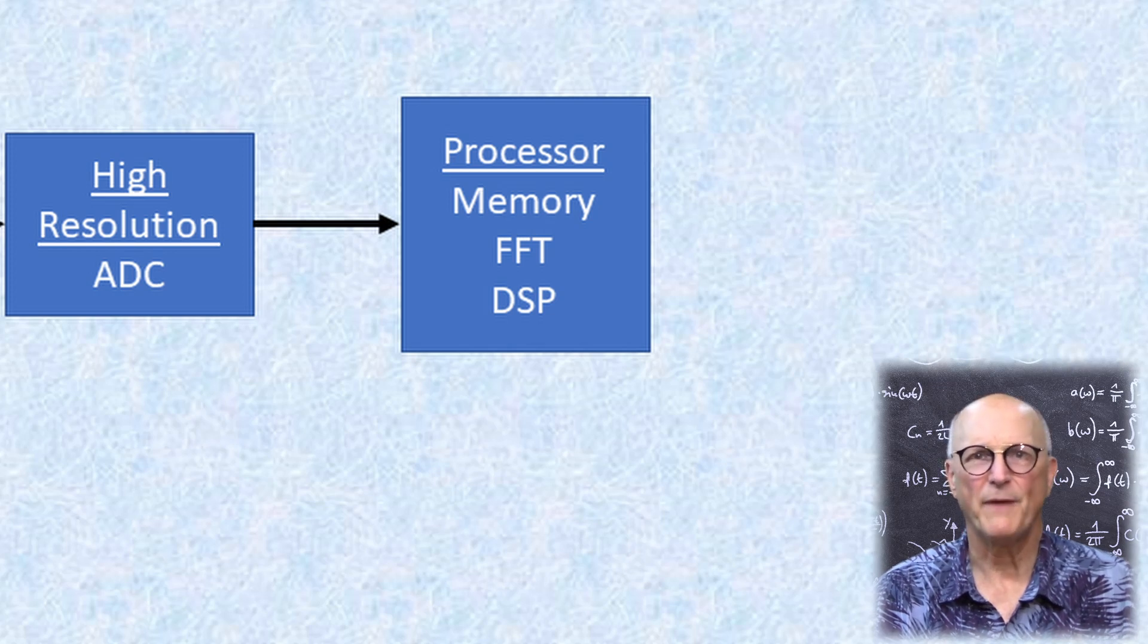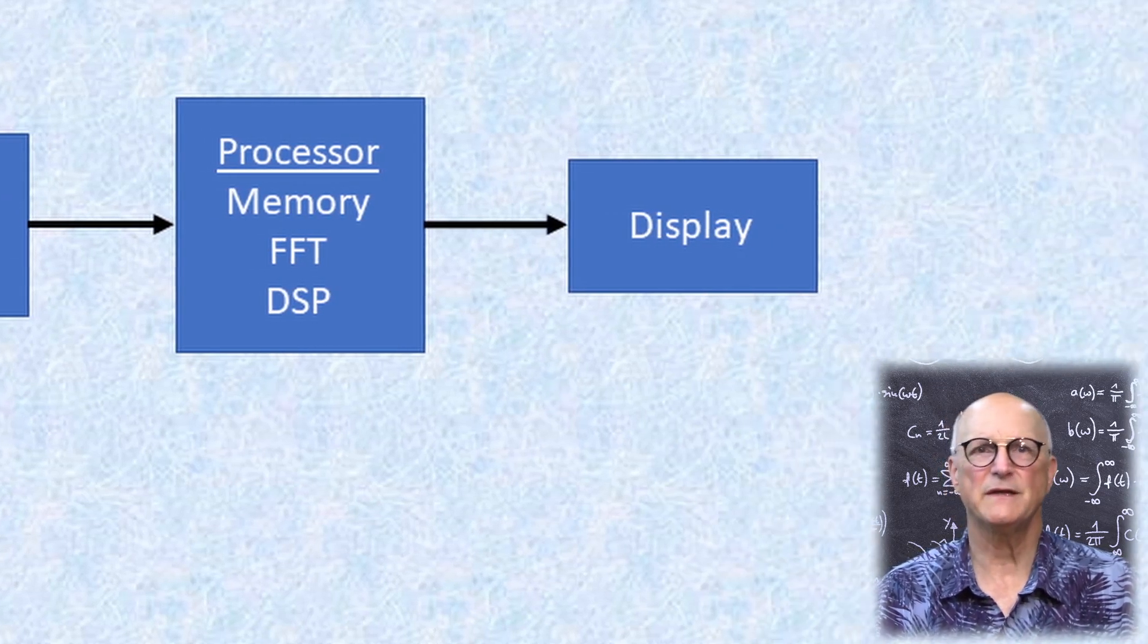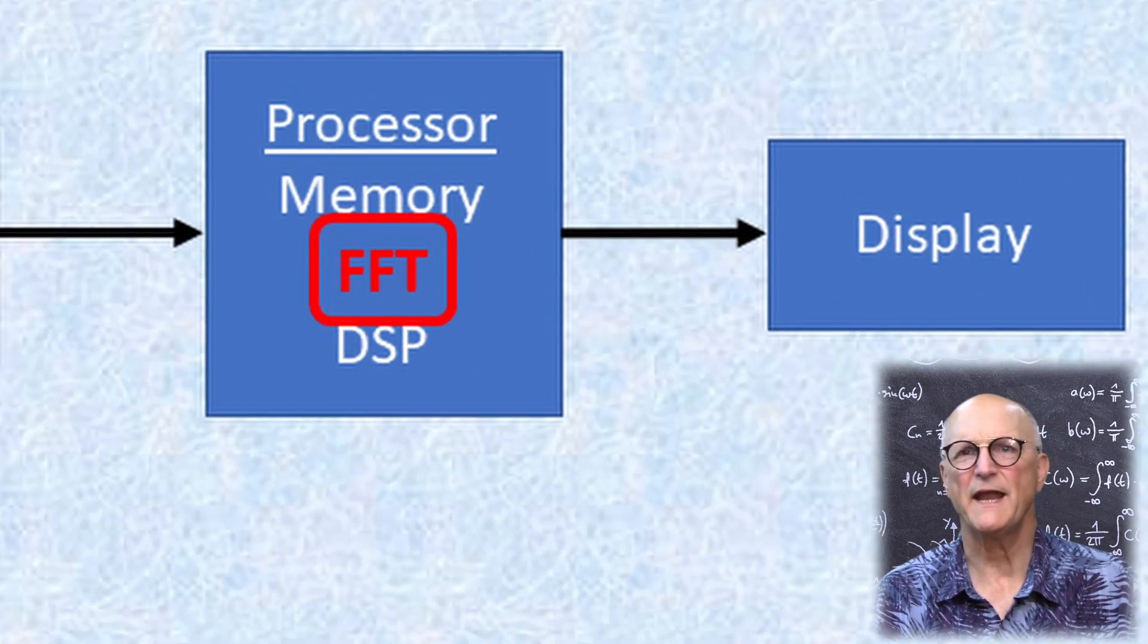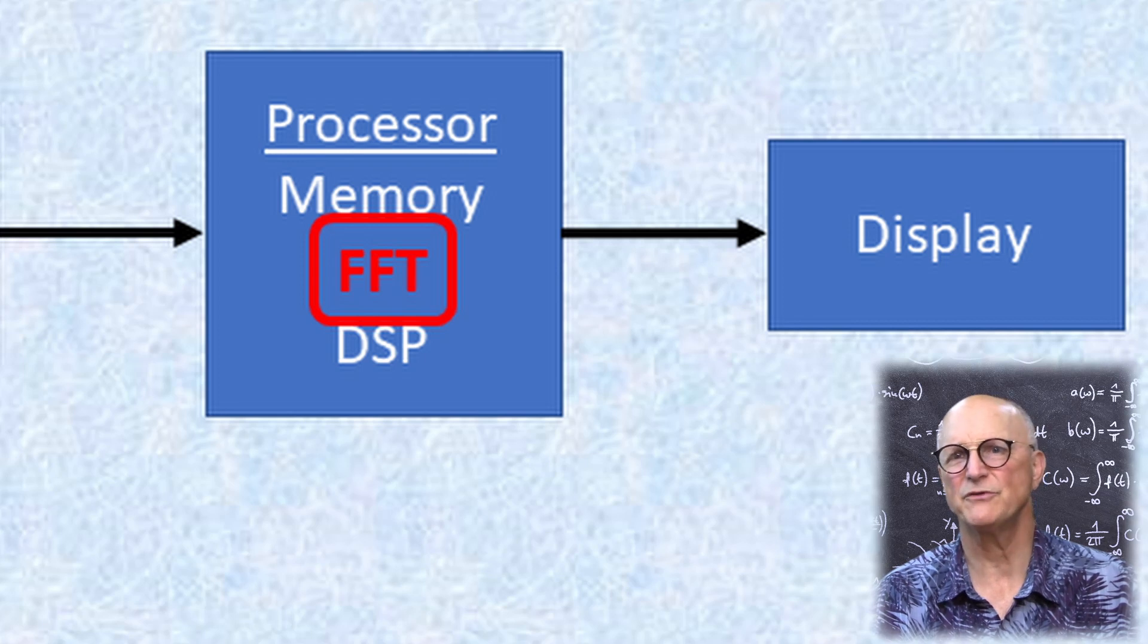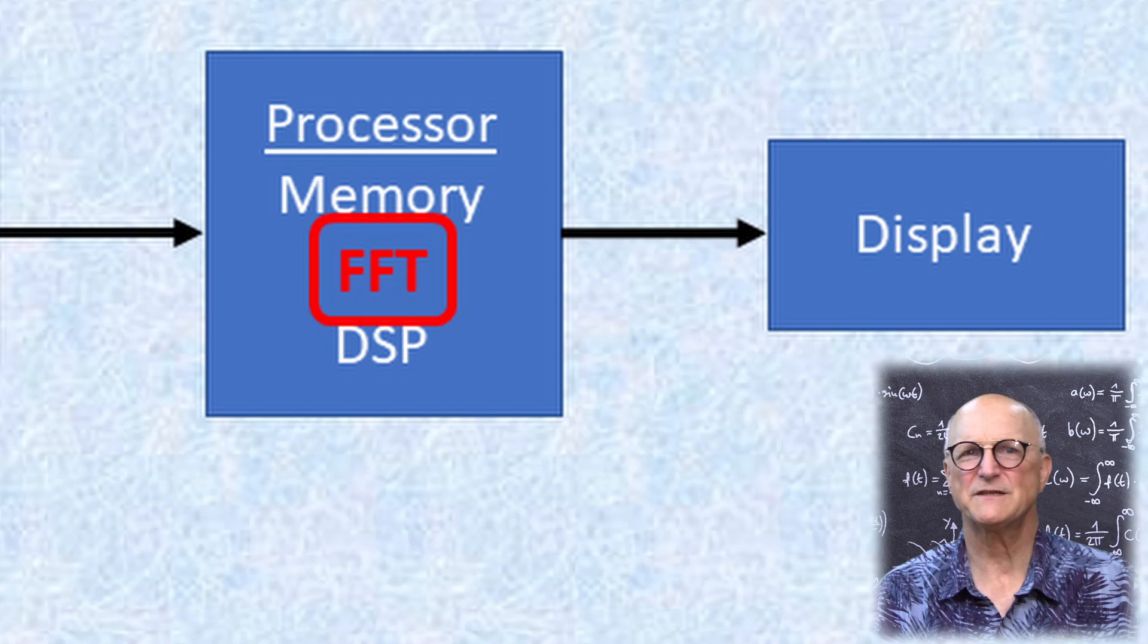After the mathematical machinations are complete, the processor formats the data to be displayed on the screen. Now I just mentioned that the processor performs an FFT on this sample data, but what is an FFT or fast Fourier transform?